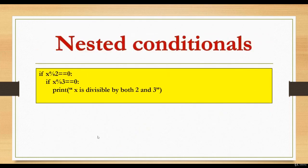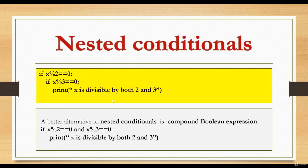Next, nested conditional. In this example you can see that another condition is nested within the first condition. If both of them are true, it will print 'x is divisible by both 2 and 3'. A better alternative to nested conditions is to use a compound boolean expression — the same thing can be achieved using: if x modulo 2 equals 0 and x modulo 3 equals 0, then print 'x is divisible by both 2 and 3'.